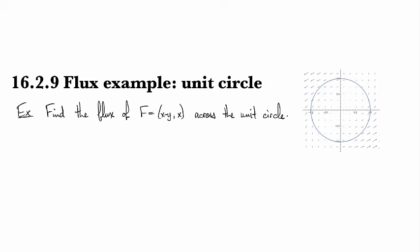Okay, so in this example we're going to compute the flux of this vector field here, x minus y comma x, across the unit circle. This is what the vector field looks like, so we're going to be going around this way.